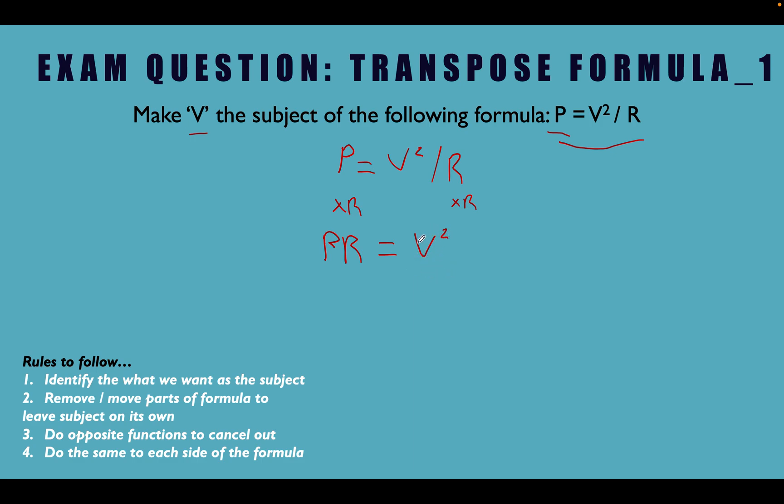Okay, we're still not done because we want V on its own without it being squared there. So let's do the opposite of square, which is the square root. So again, let's do the opposite function to cancel out. Cancel out this square. We're going to put the square root in. So we square root each side. Do the same to each side of the formula.